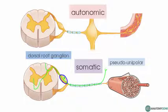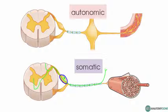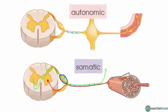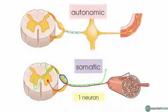It's the efferent component I want to draw your attention to. The motor component of the somatic nervous system originates in the ventral horn of the spinal cord in the grey matter, leaves via the ventral root, and then there is this single neuron which innervates the skeletal muscle and results in contraction. The key here is that there's one single neuron in the efferent component of the somatic nervous system which extends from the central nervous system to the periphery.